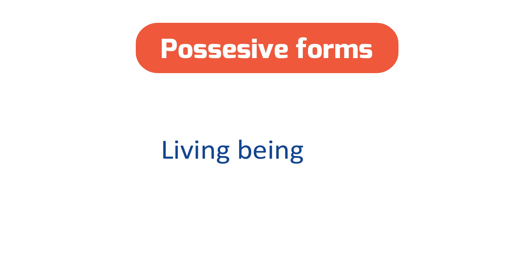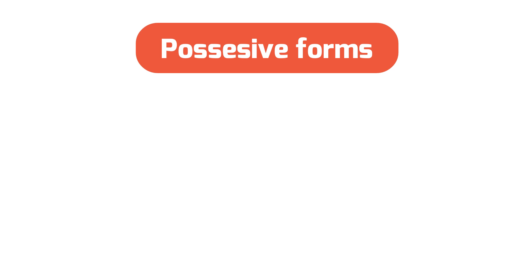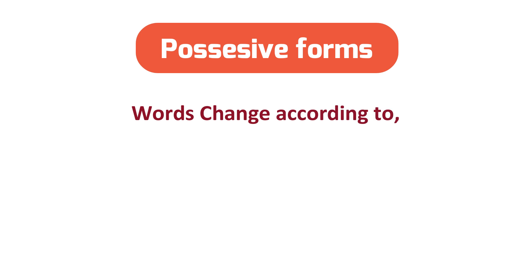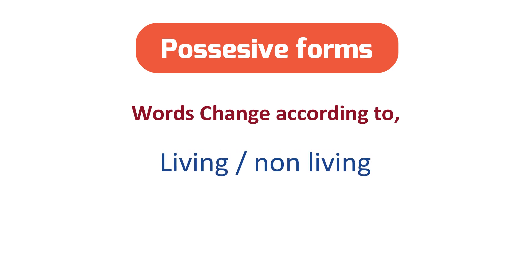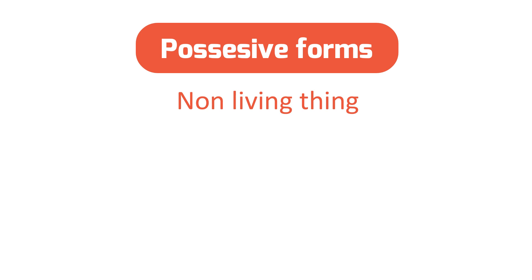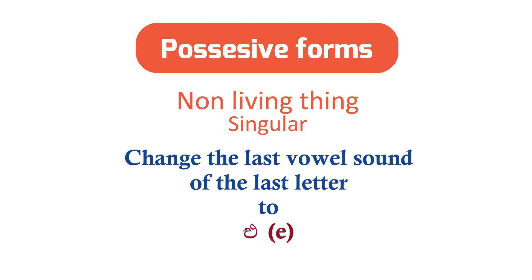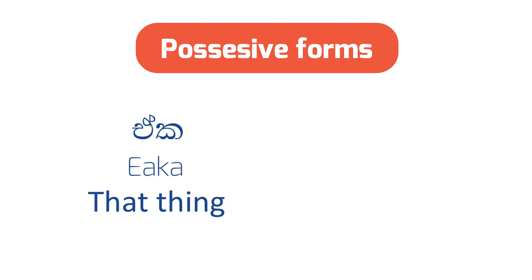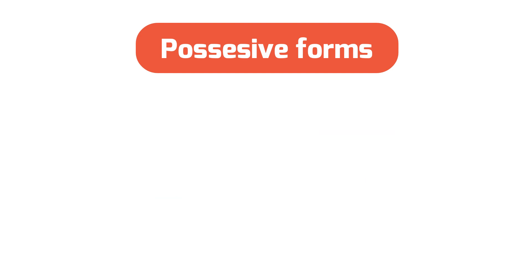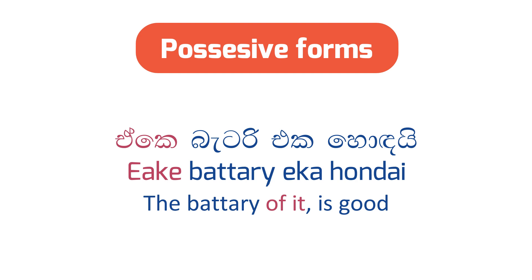Now for non-living things, making a possessive form is a bit different. In Sinhala, words, suffixes, and grammar change depending on whether you're talking about a living being or not, and sometimes whether it's plural. For a singular non-living word, we change the vowel sound of the last letter to e. For example, eeka changes to eke, which means of it. Example sentence: eke battery eka hondai — the battery of it is good.